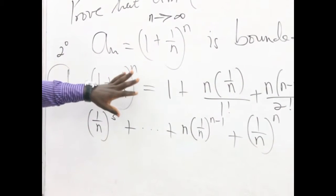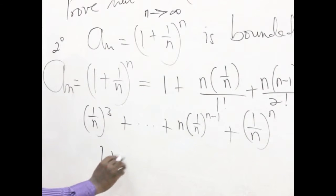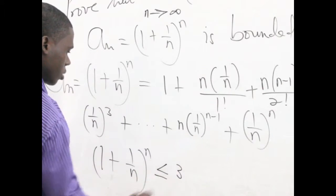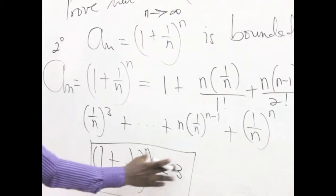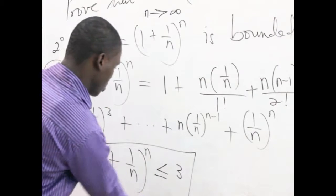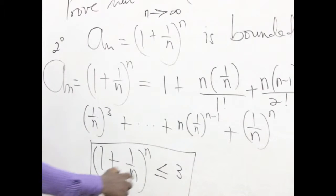When bounded above by 3, it means we are trying to show that (1 + 1/n)^n is actually going to be less than or equal to 3. This is what we are driving at — that this should be less than or equal to 3, for us to say that this is bounded above by 3. So we need to introduce an inequality sign.